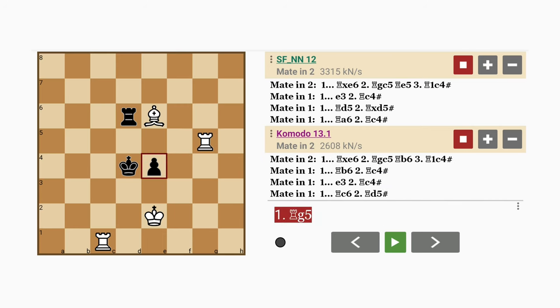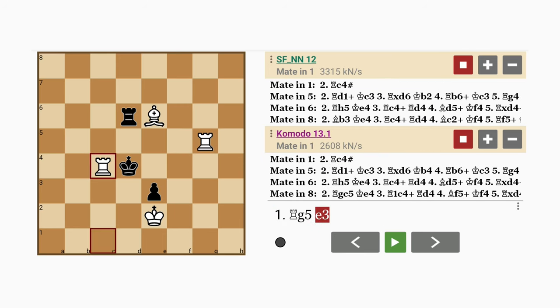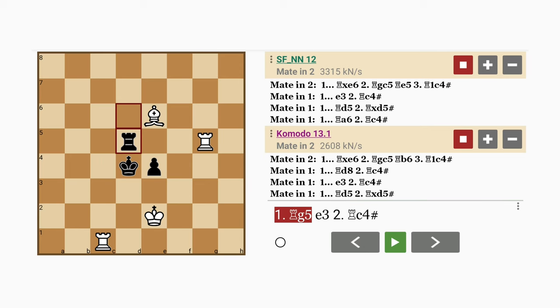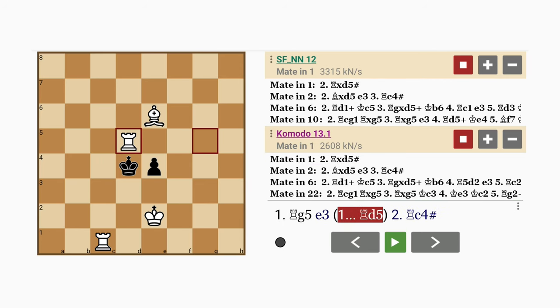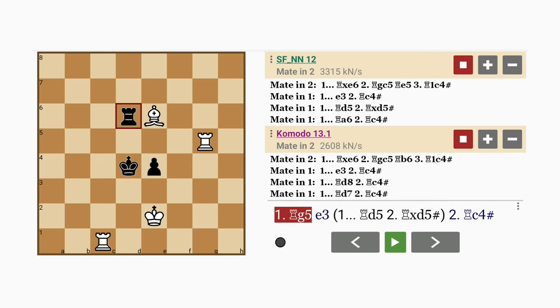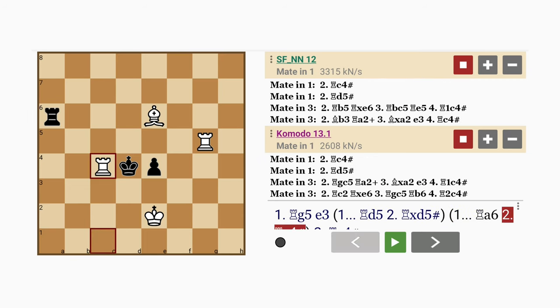Now let's see what happens if black tries something like e3 rather than rook to c4 mates. And what about rook to d5? Well then rook captures rook with mate. And what about rook to a6? Same thing, rook to c4 mate.